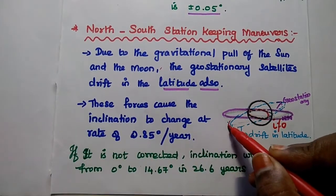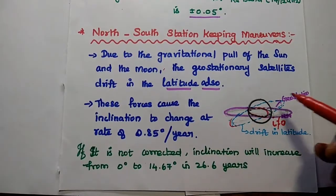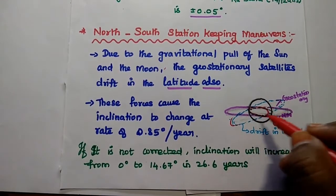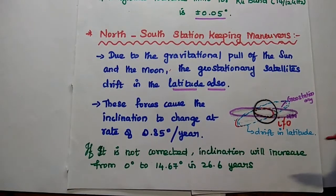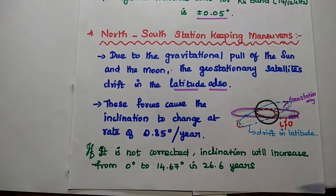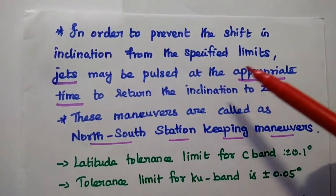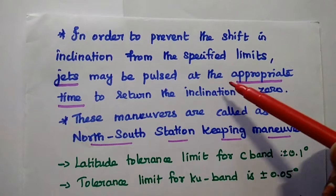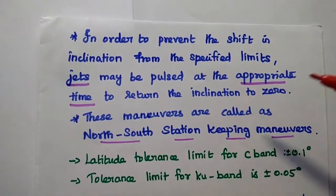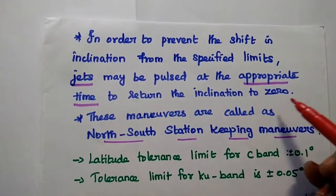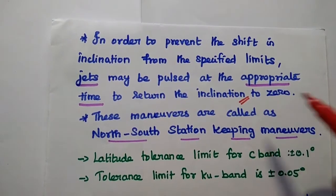The inclination increases at a rate of 0.85 degrees per year. Due to the gravitational pull of the sun and moon, the geostationary orbit becomes inclined with respect to the equatorial plane. If not corrected, the inclination will increase from 0 degrees to 14.67 degrees in 26.6 years. In order to prevent the shift in inclination — that means in latitude — jets are pulsed at the appropriate time to return the inclination to 0. The inclination is the angle between the equatorial plane and the geostationary orbit, and it should always be 0.